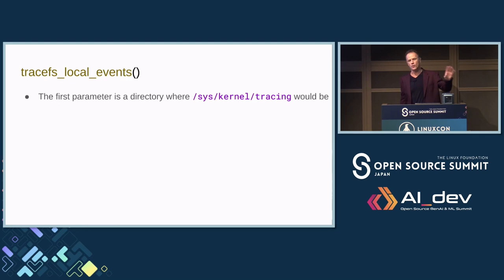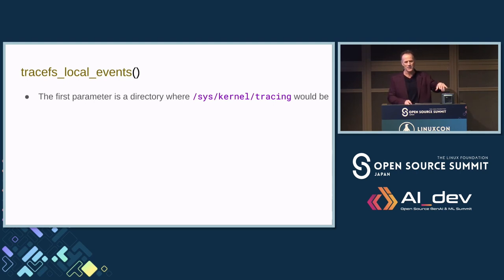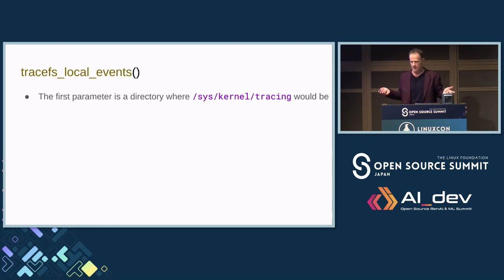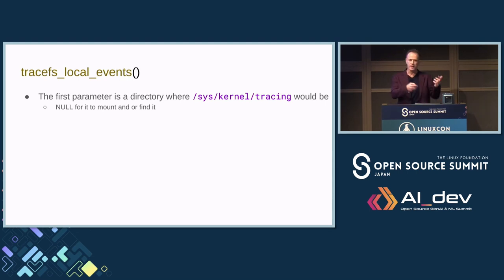The very first thing I do is tracefs_local_events. This will go through and read all the information about the events — it scans all the events in the tracefs directory and records the format files and does it all for you. Sometimes it takes a couple seconds to execute because it's loading all the events up. You could limit it; there's another function where you can specify just a couple of systems you care about, since there are thousands of events. If the parameter is null, it will mount the tracefs file system if it's not already mounted, find it, and load everything up.